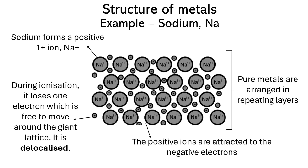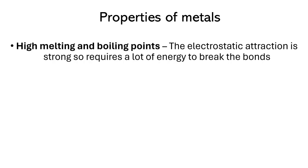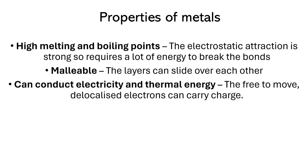Knowing all of this, what are some of the key properties of metals? Those strong bonds require a lot of energy to overcome, so metals have high melting and boiling points. The layers can slide over each other, so metals are malleable, or able to be bent. The delocalized electrons allow the metal to conduct electricity. Finally, light can reflect off of metal ions and this makes them appear shiny or lustrous.